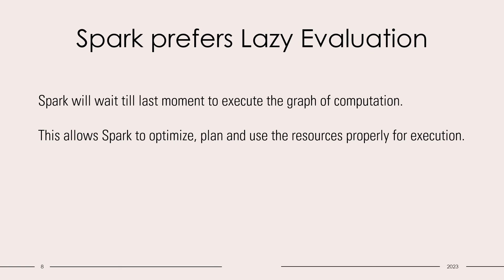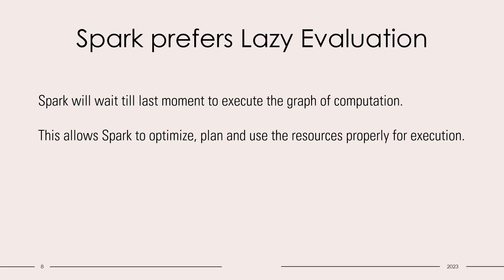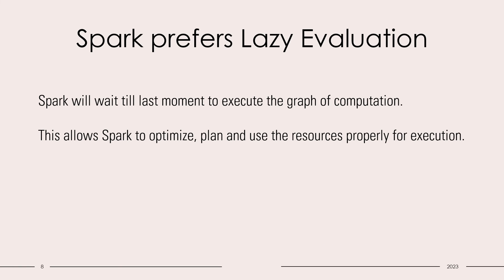Let's understand with an example. Consider you have a sandwich shop and a customer comes up and asks for a white bread sandwich. You start preparing it, but the customer changes his mind and asks for brown bread. You will have wasted your time and your white bread resource. The better way: wait for the customer to complete and pay for his order — that payment is the action. Once payment is done, the order is locked. Now you know exactly what the customer wants — brown bread with whatever ingredients. You can plan for it and make the sandwich in a more optimized way. This is called lazy evaluation, and Spark also prefers lazy evaluation.